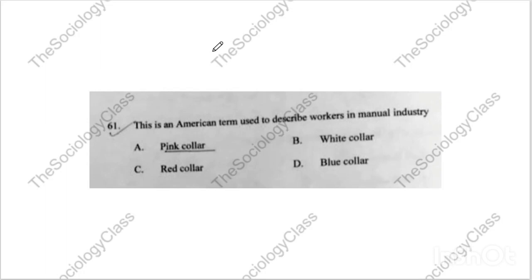Question number sixty-one — also repeated: 'Manual industry workers are called what?' The correct answer is D — blue collar. I have discussed pink, red, black, and white collar as well in previous papers.